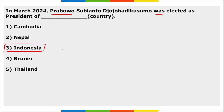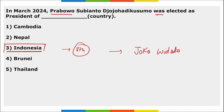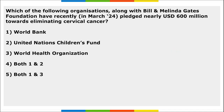In March, Prabowo Subianto was elected as the President of Indonesia. He is scheduled to become the eighth President of Indonesia, and he will succeed Joko Widodo.